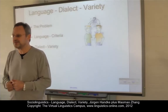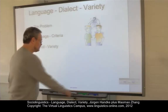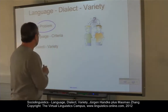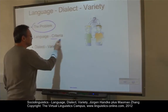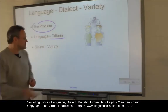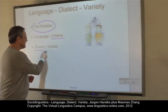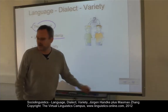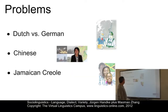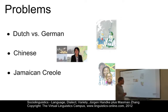Probably not. And this defines our program. We will first look at some problem cases. And knowing about these problems, we will then look at criteria to define what a language really is. And eventually, we will look at dialects or varieties and define them more precisely. Here we have three problem cases: the first one concerns the relationship between Dutch and German, then we will look at Chinese, and eventually we will look at Jamaican Creole.